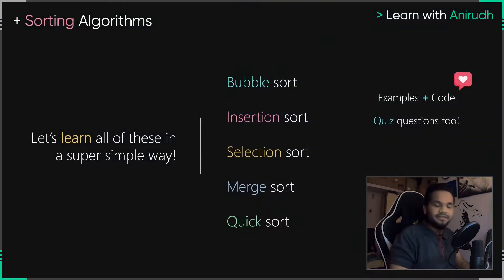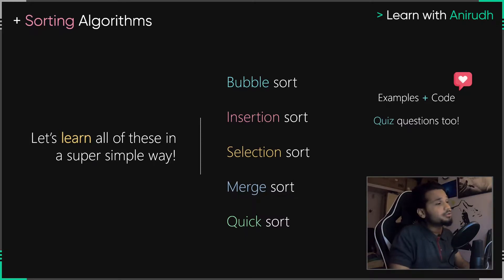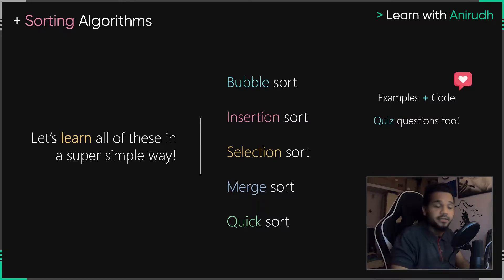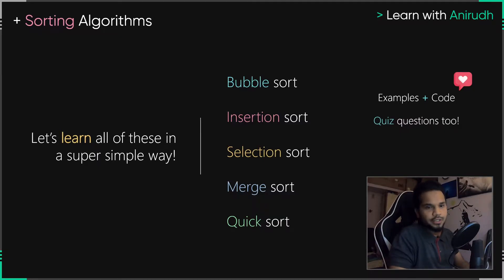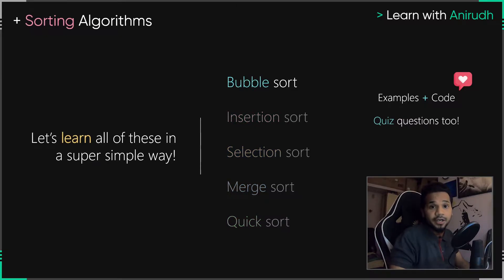There are multiple algorithms that you guys should know, especially when it comes to sorting. If you have ever given interviews, you know that this is a very common concept that gets asked in almost all programming interviews, especially if you're a fresher or a beginner — you have to be thorough in all of these concepts. We're going to be discussing five different sorting algorithms in the next five episodes, and in this episode we're going to be taking a look at bubble sort.